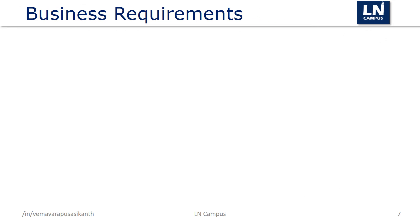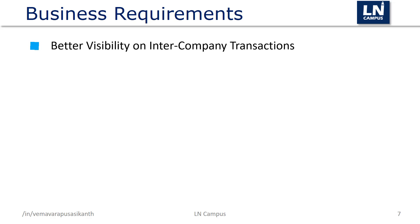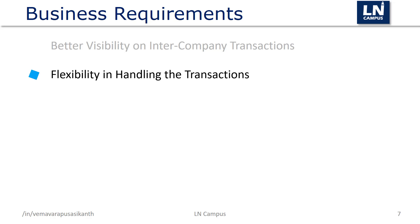In a typical large enterprise where intercompany transactions are high in number, it is essential to have better visibility — for example, visibility on orders that are ready to process, orders that require approval, or the margin the selling company is going to realize. At the same time, handling these transactions and master data maintenance should be flexible enough for the users. The new functionality should not add additional steps or processes to follow.